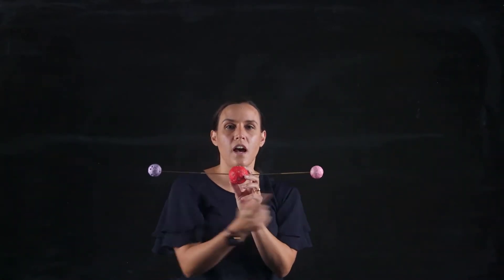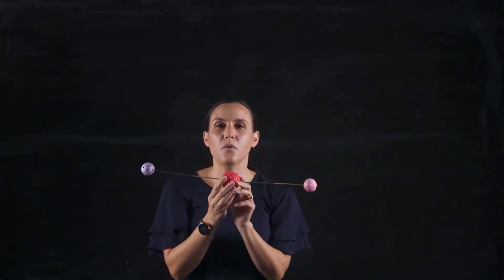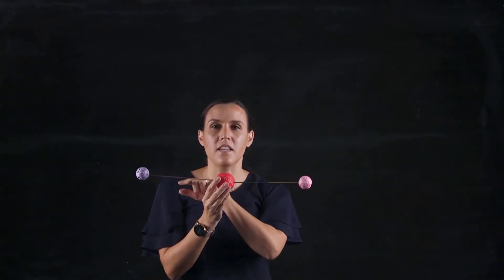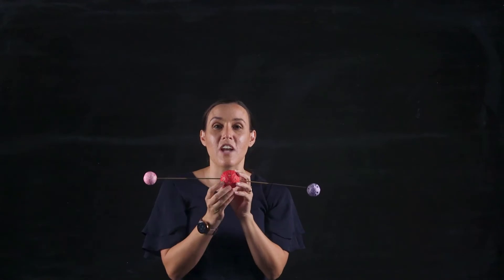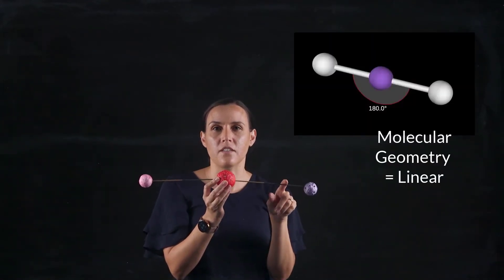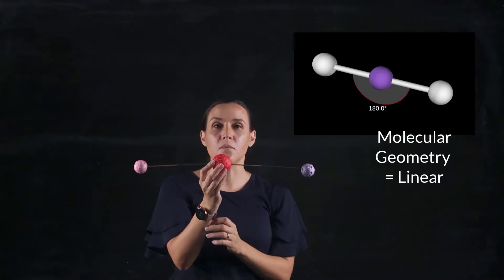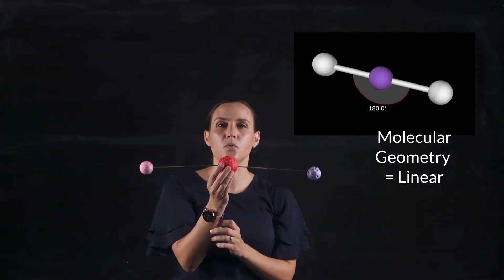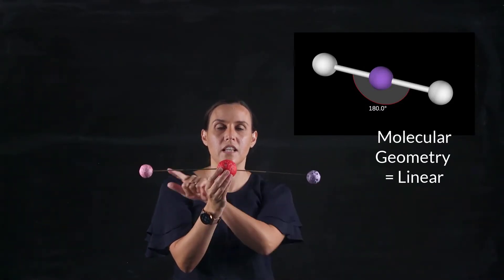We've got two atoms on either side. The way that they would arrange themselves would be to maximize the distance between the two atoms, so they would be 180 degrees away from each other. The shape we would label this would be a linear shape, so it's got a linear arrangement.